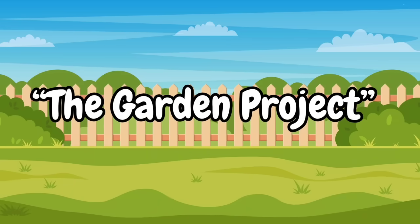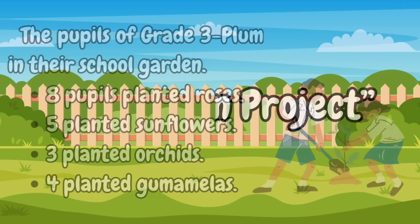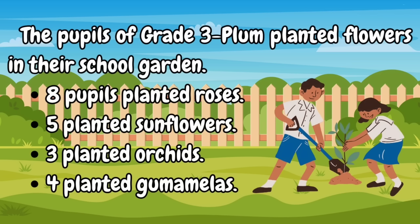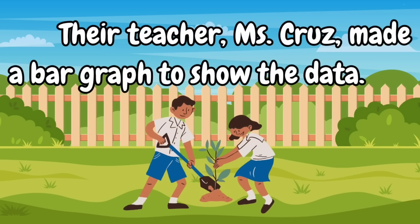The Garden Project: The pupils of Red Tree Plum planted flowers in their school garden. Eight pupils planted roses, five planted sunflowers, three planted orchids, and four planted gumamelas. Their teacher, Ms. Cruz, made a bar graph to show the data.